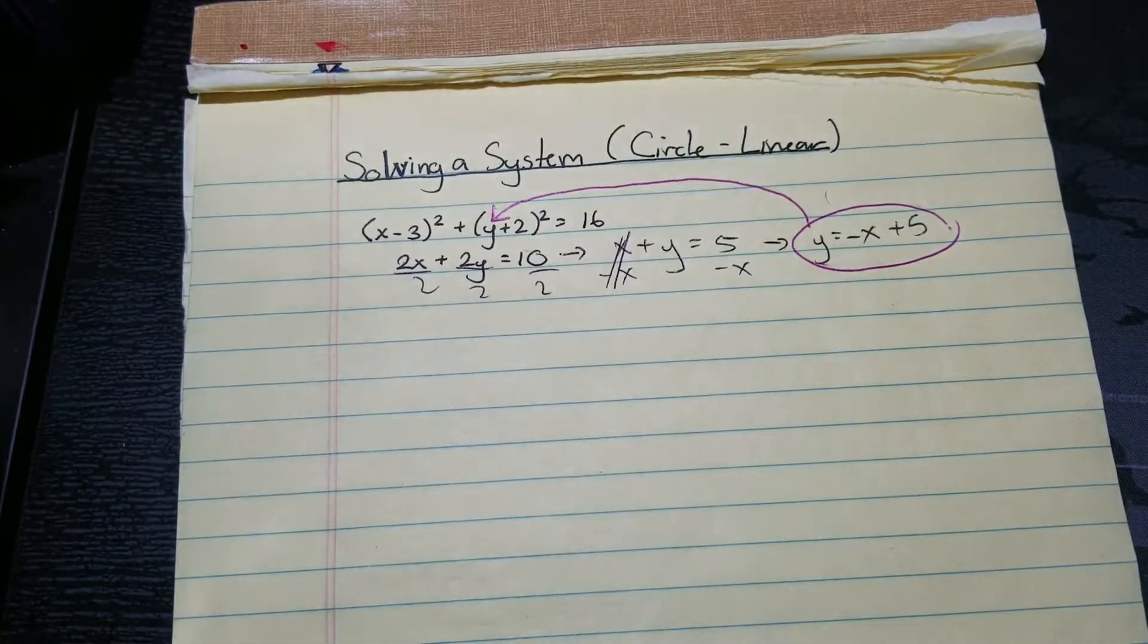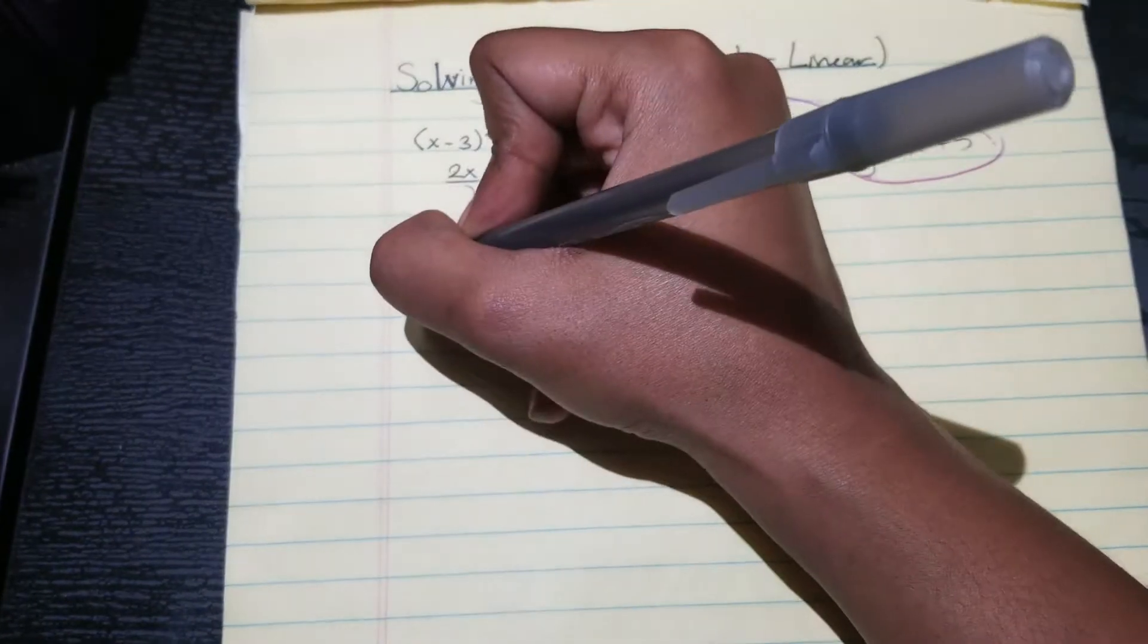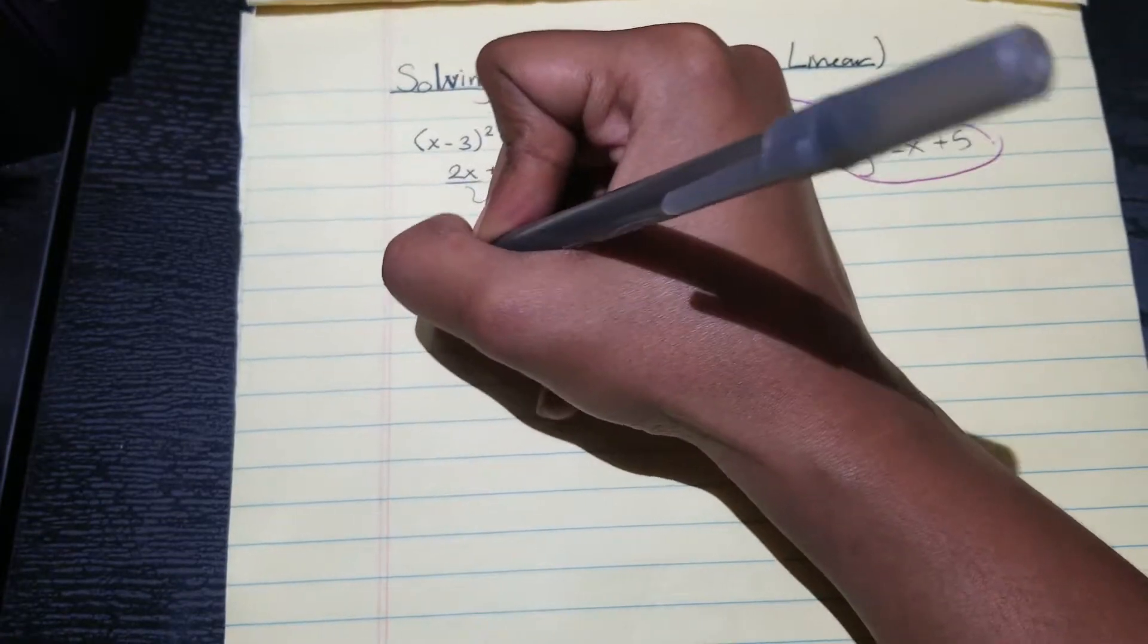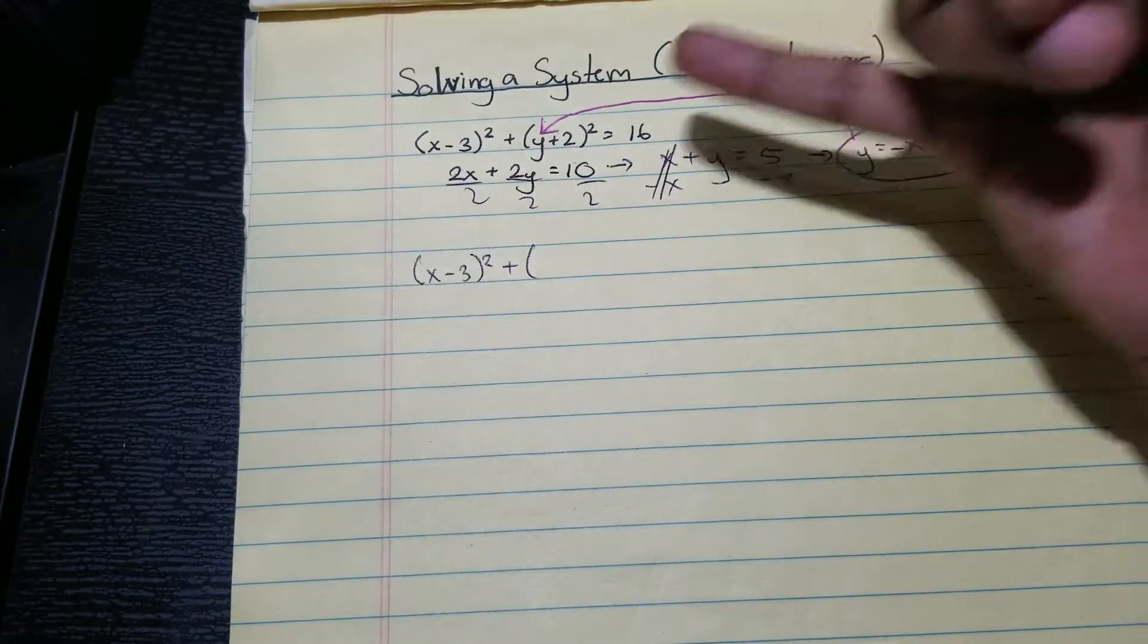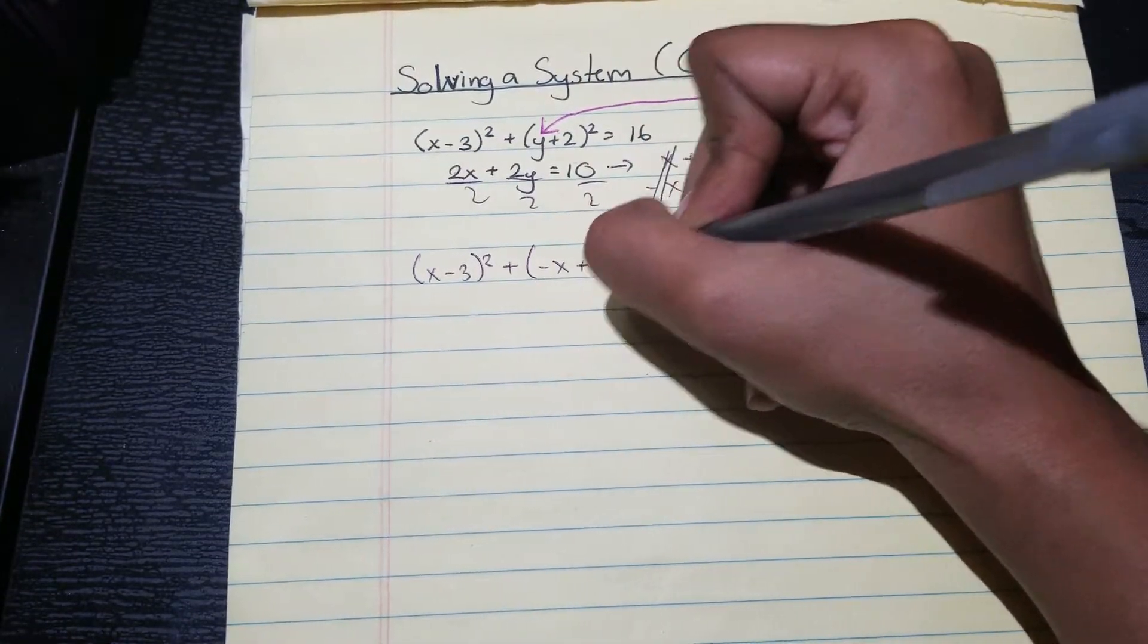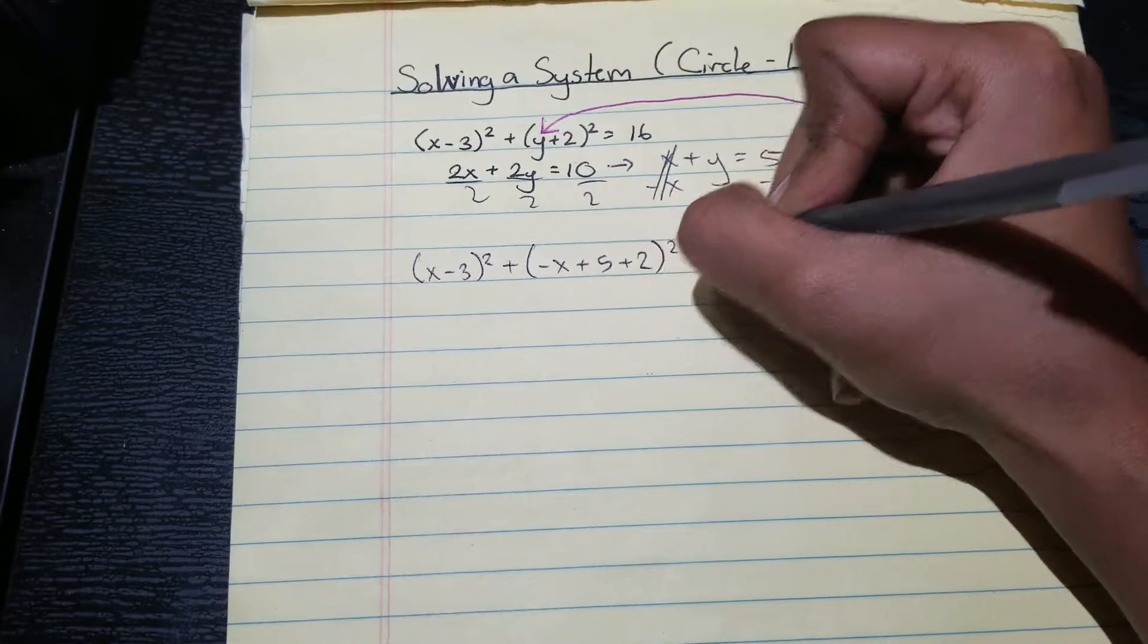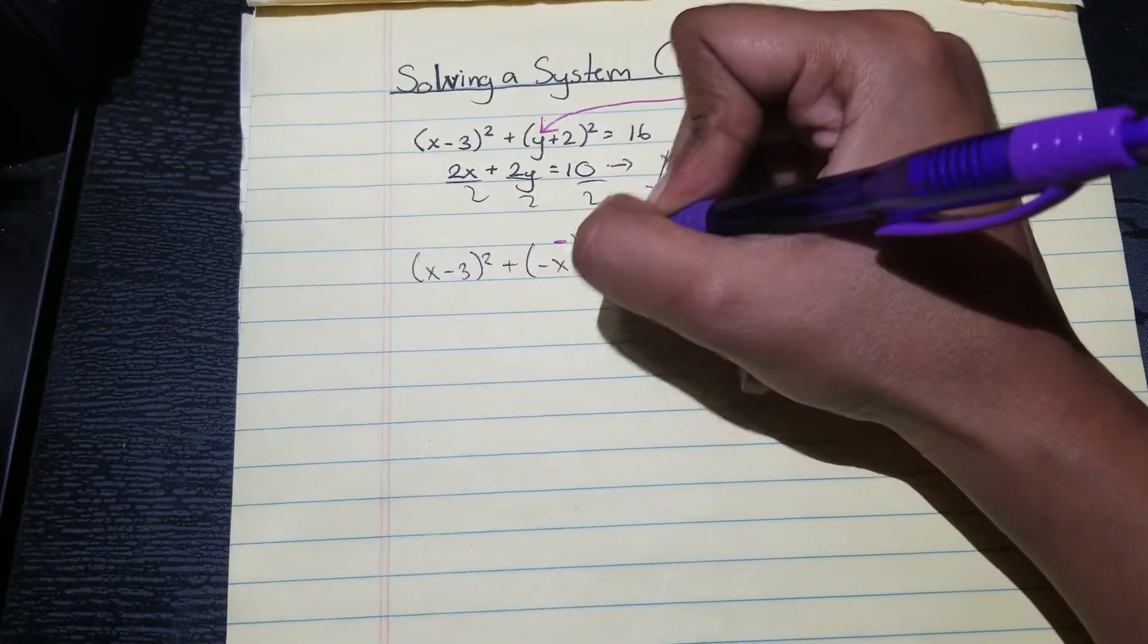Okay, great. So now this y equals equation is going to be substituted right here, right where that y is. So then this circle equation here becomes the following: it's going to stay x minus three squared, but then it's going to change into, instead of y plus two, it will be negative x plus five plus two squared equals 16. And if I were to combine this, this becomes negative x plus seven squared.